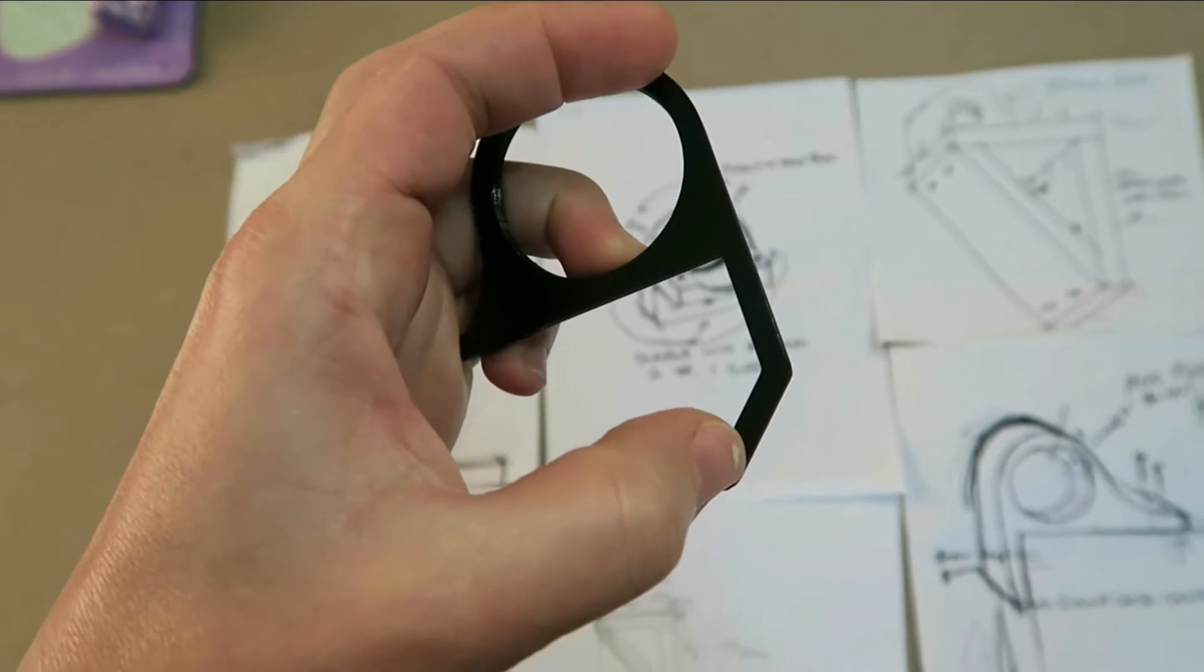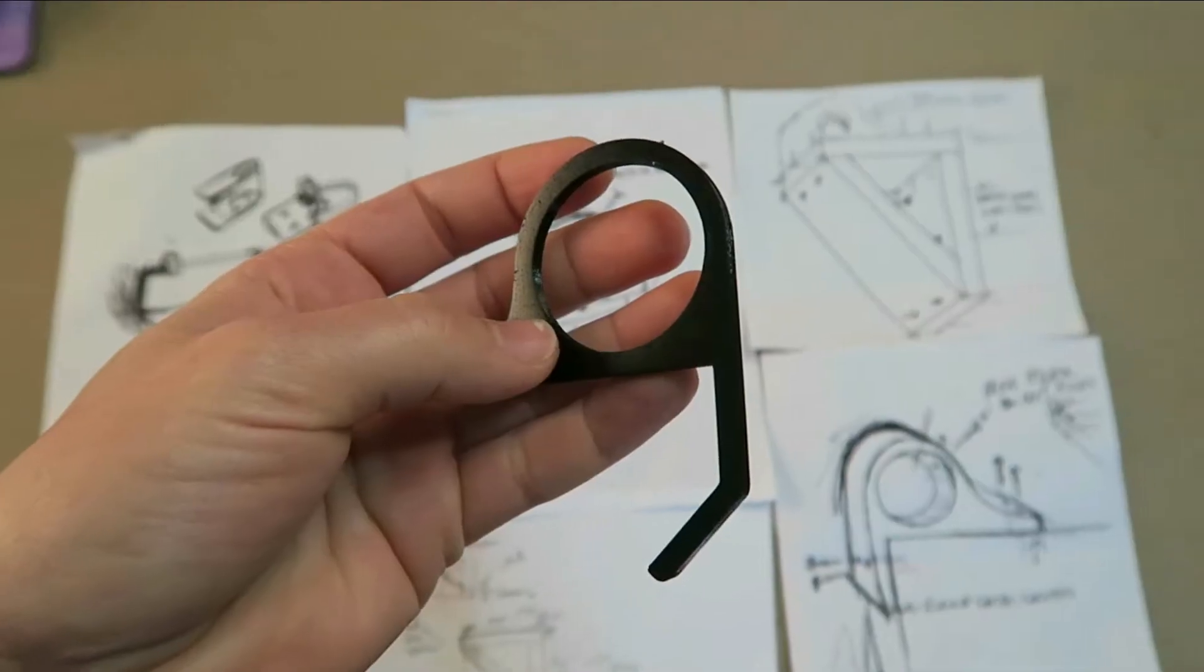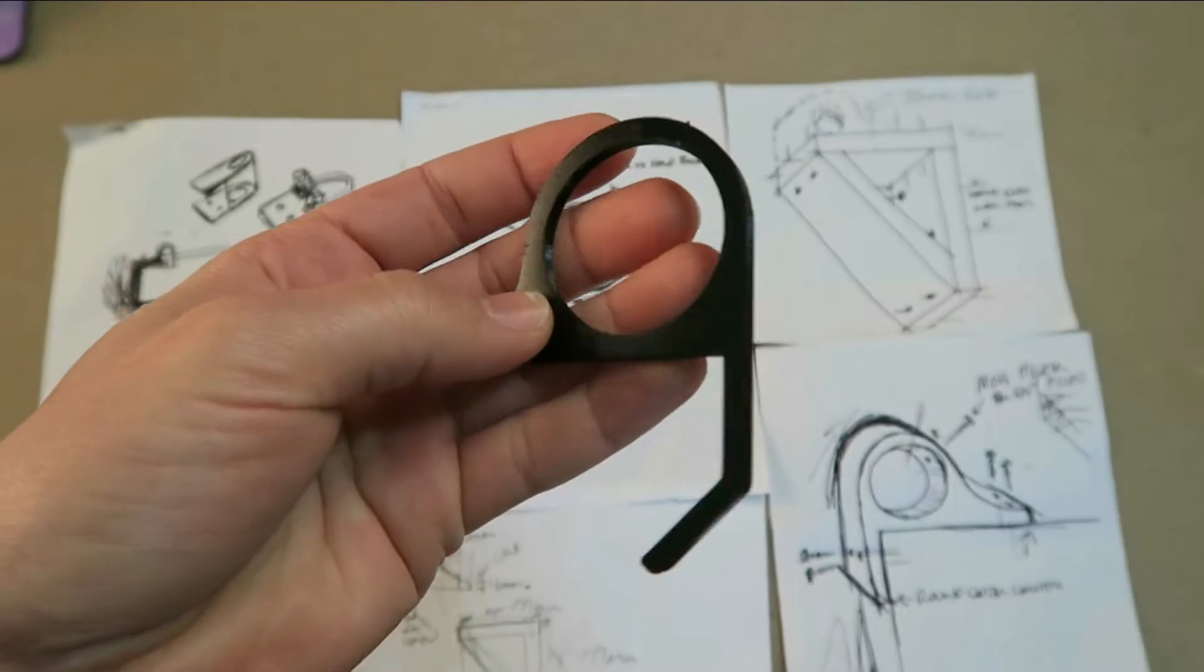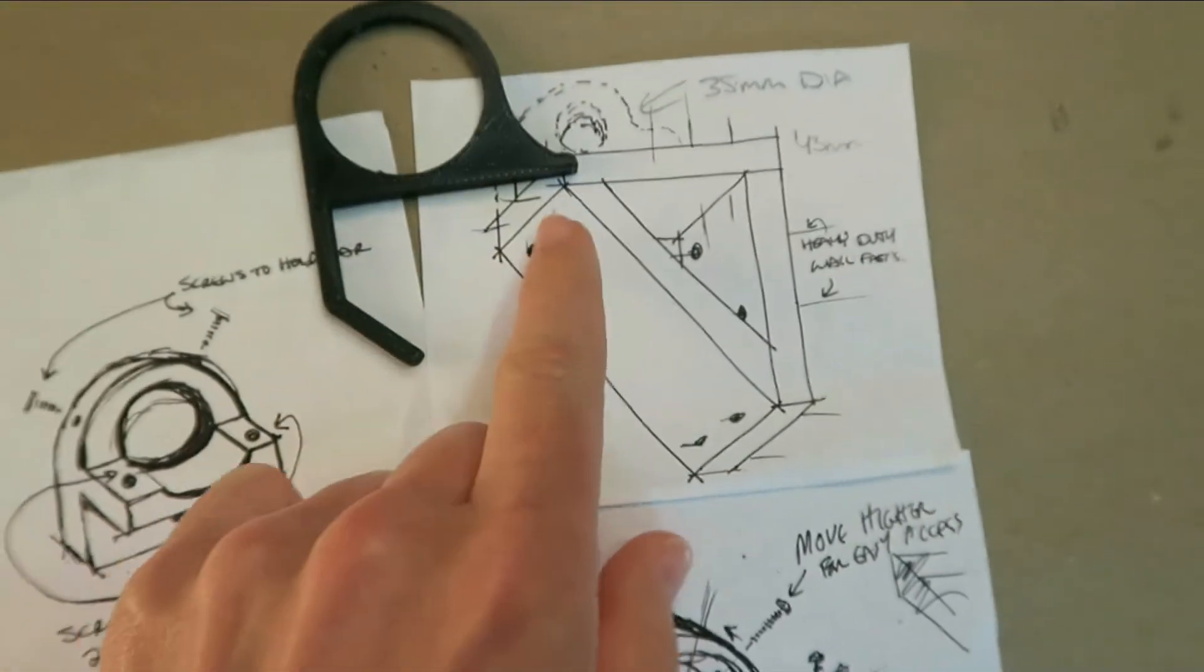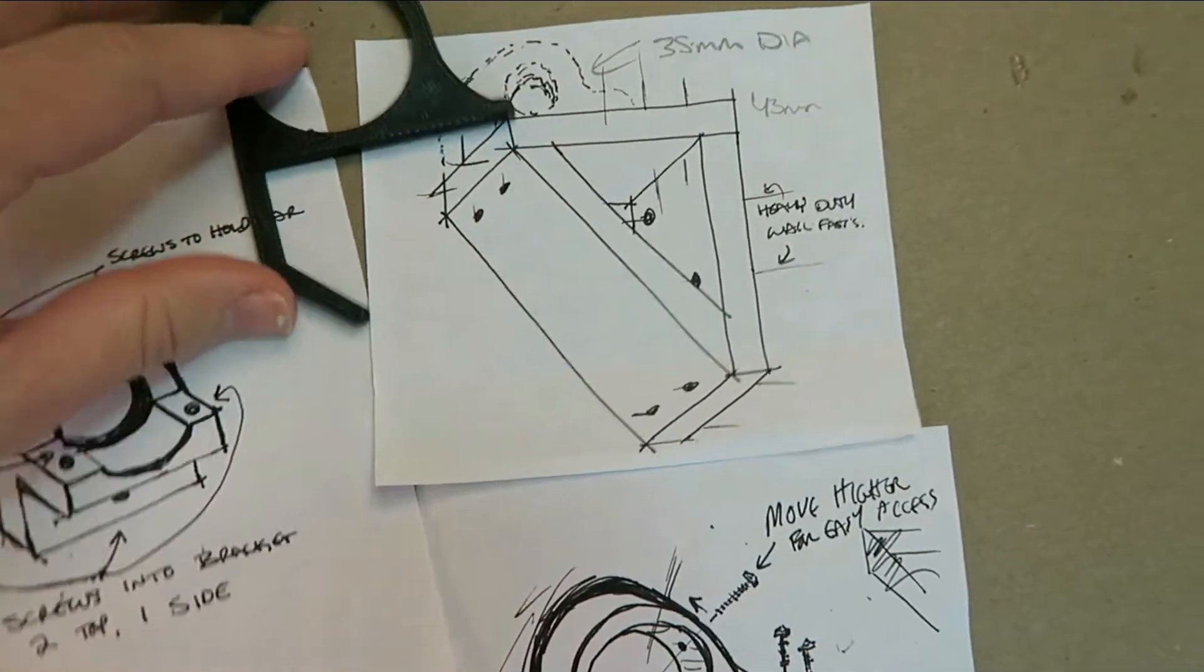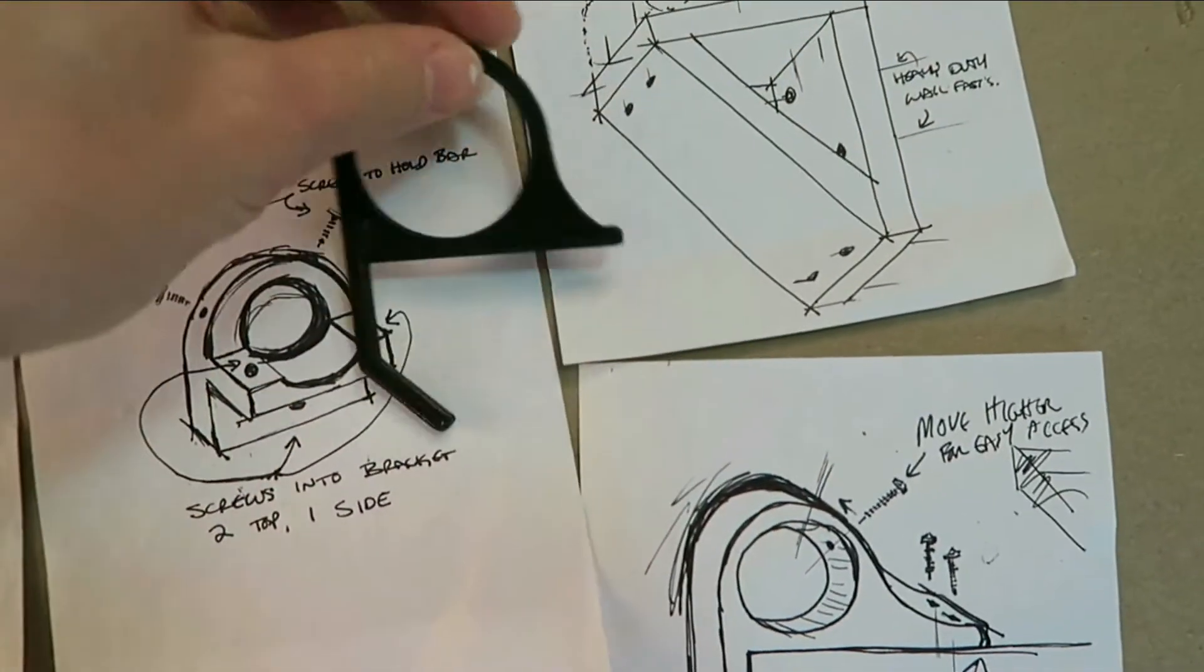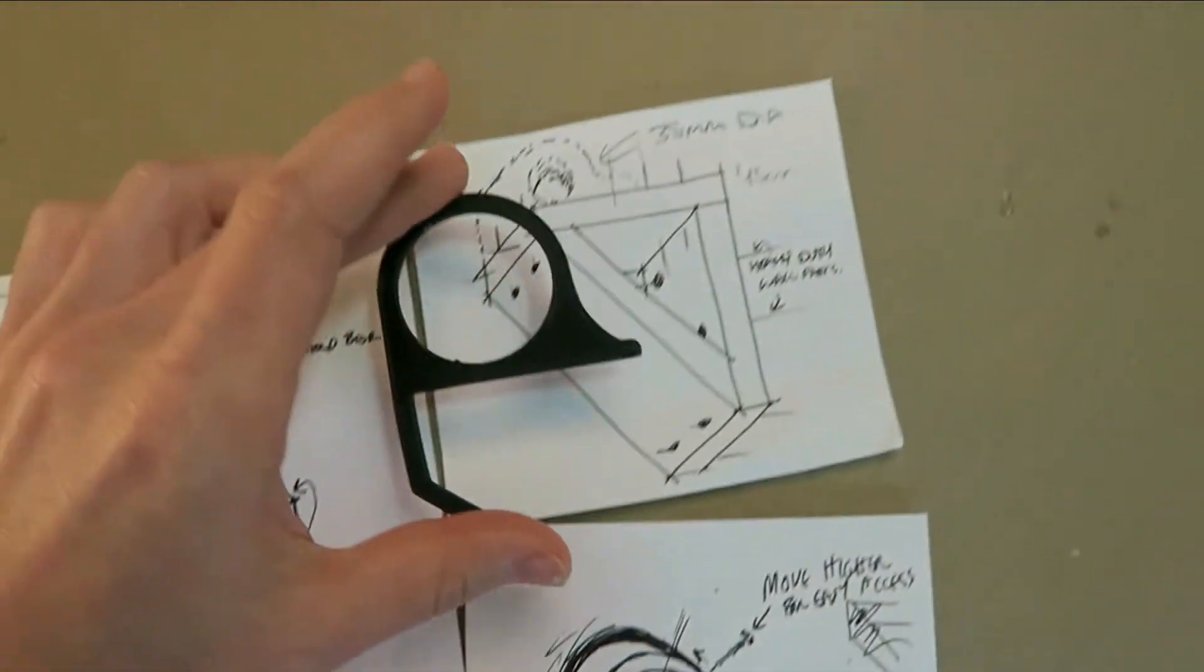I eyeballed the placement for the screws and subtracted a 2mm cylinder for each one. I loaded the model into Cura and did a test print, just a few millimeters of the bracket to make sure the dimensions work, especially the cutout for the rod, which needs to be a snug fit.